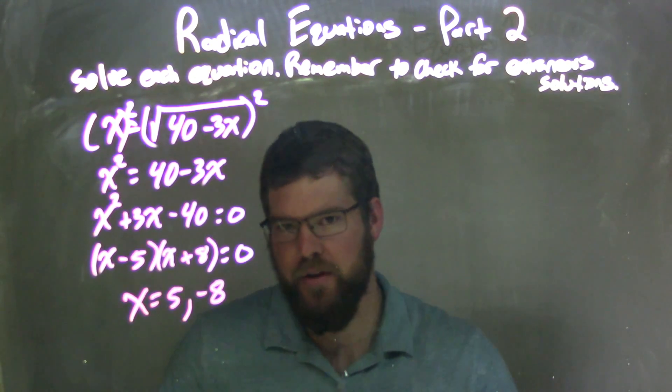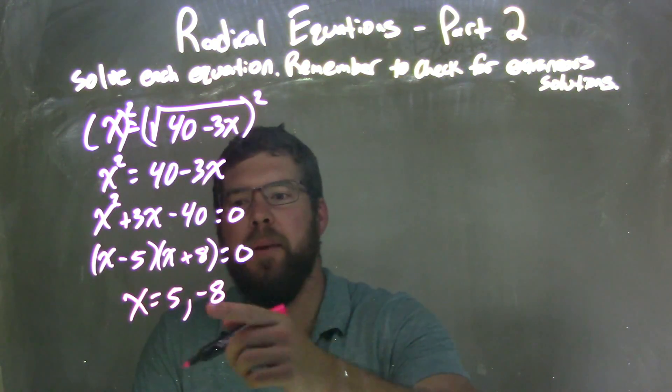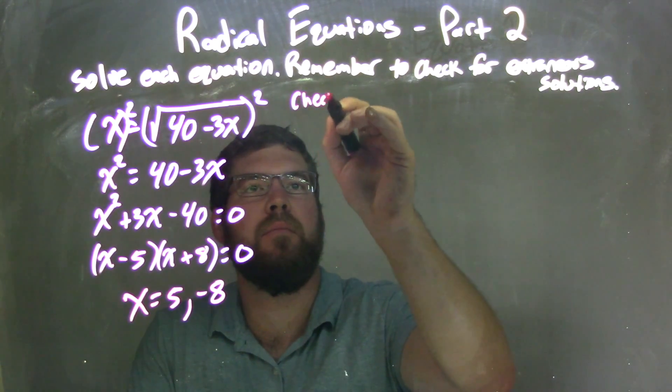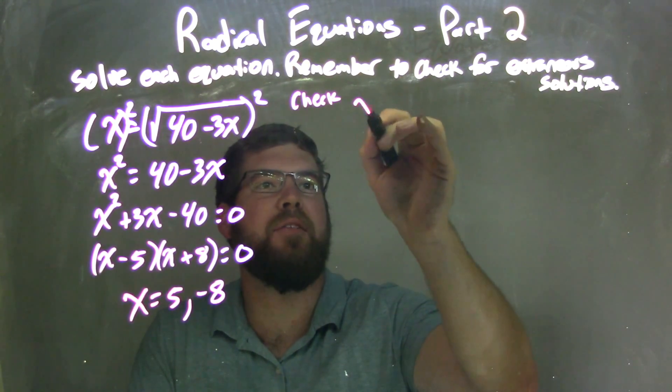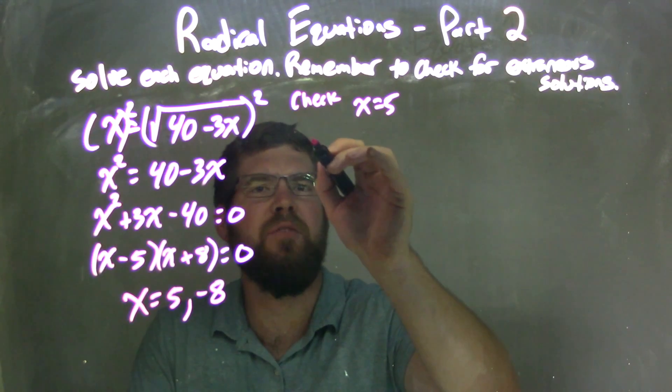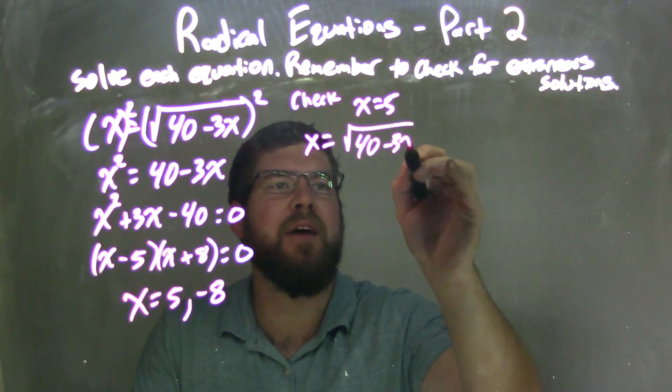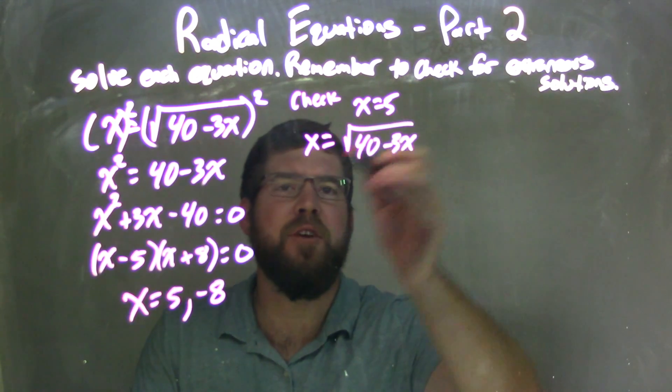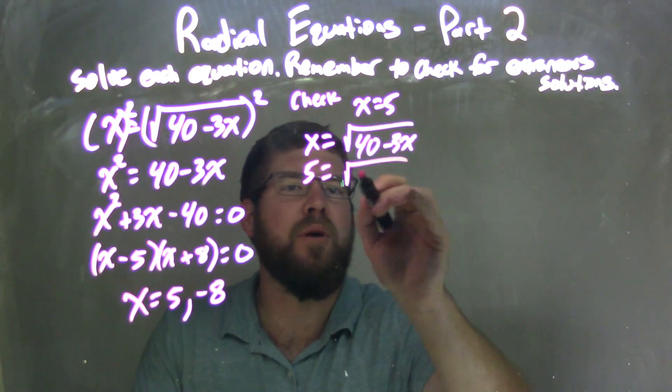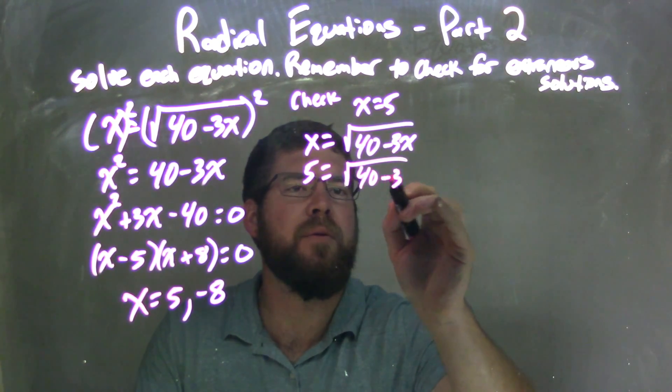We need to check this. We're going to plug it back into our original equation. Let's do x equals 5 first. We have x equals square root of 40 minus 3x. Checking for extraneous solutions here, plug in 5: 5 equals square root of 40 minus 3 times 5.